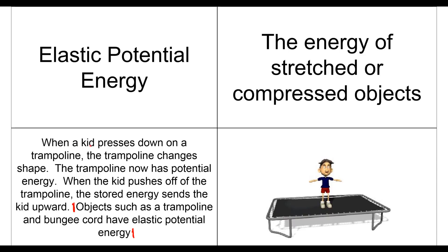When a kid presses down on a trampoline, the trampoline changes shape. The trampoline now has potential energy. When the kid pushes off of the trampoline, the stored energy sends the kid upward. Objects such as a trampoline and bungee cord have elastic potential energy.